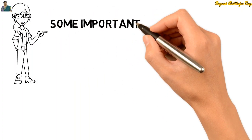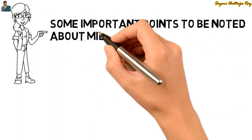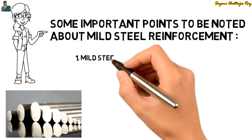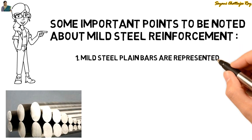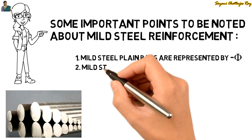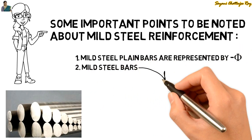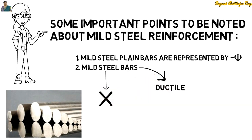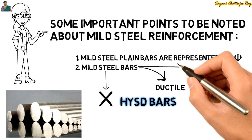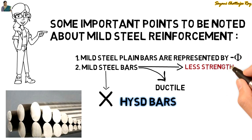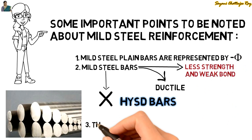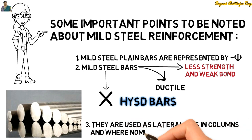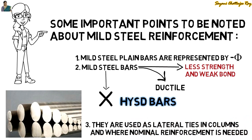Now we will see some important points about mild steel reinforcement. Mild steel plain bars are represented by the symbol phi. Although mild steel plain bars are very ductile, they are not preferred over high yield strength deformed bars because of their lesser strength and weak bond. They are used as lateral ties in columns and at places where nominal reinforcement is required.